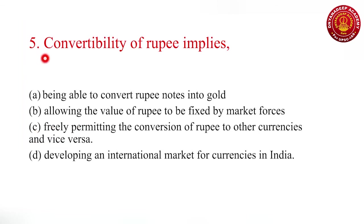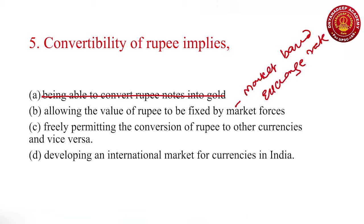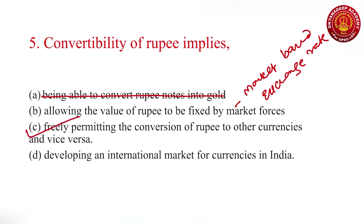Question number five: convertibility of rupee implies — being able to convert rupee notes into gold? No, that's wrong. Allowing the value of rupee to be fixed by market forces? No, when the value of rupee is fixed by market forces it is called a market-based exchange rate. The third option — freely permitting the conversion of rupee to any other currency and vice versa — is the most correct answer. It is the freedom of a holder of domestic currency to convert that currency into any other currency, and simultaneously converting any foreign currency into domestic currency. The more the convertibility, the more freedom to conduct all kinds of trade. The fourth option, developing an international market for currencies in India, is also wrong.